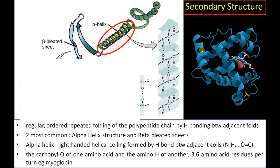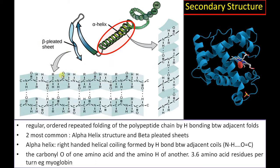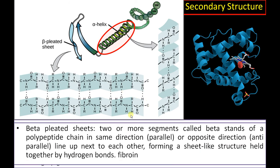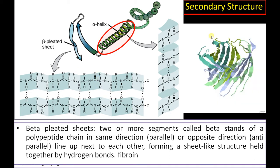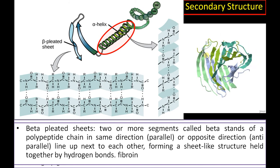The second common secondary structure is the beta pleated sheet. In beta pleated sheets, the bonding is between adjacent segments which are fully extended. The hydrogen bond forms between the amide hydrogen and carbonyl oxygen of these adjacent segments, forming sheets of protein. This structure is often present in fibrous proteins, involving two or more segments called beta strands of a polypeptide chain.